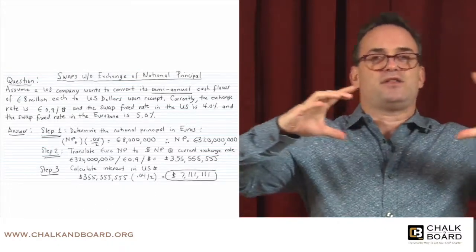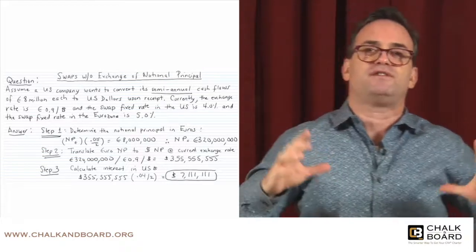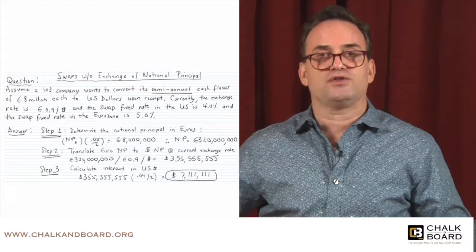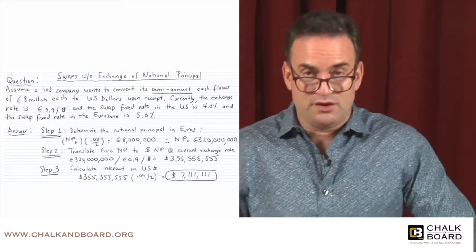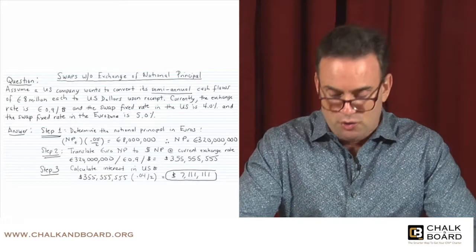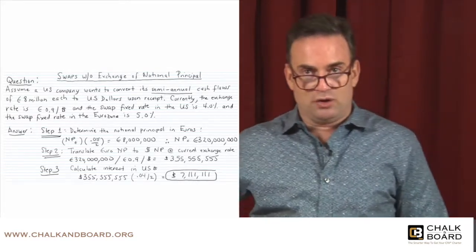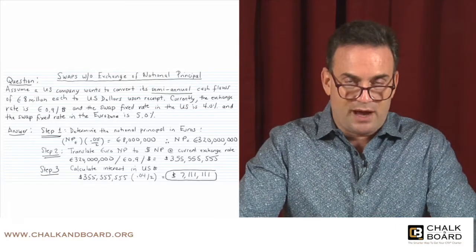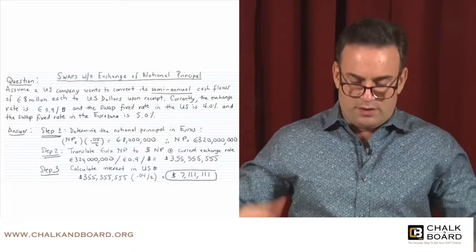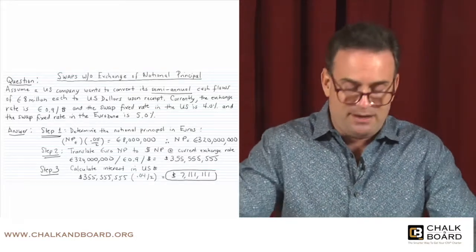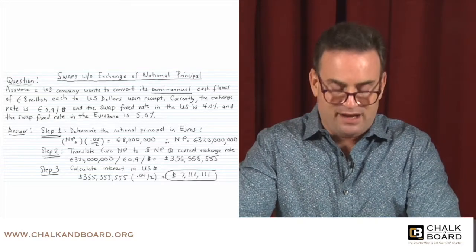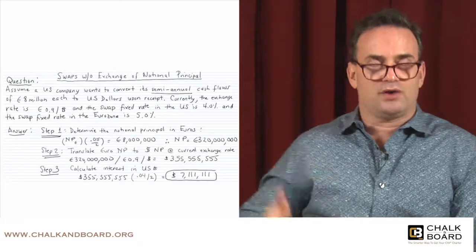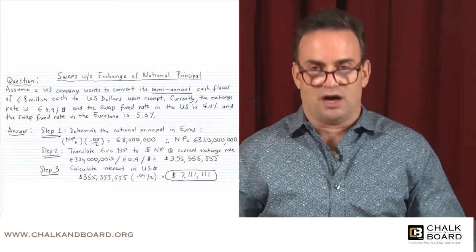Then I take the 355,555,555 dollars and calculate the semi-annual cash flows using the US swap rate of 4%, so 0.04 divided by 2. That gives a semi-annual dollar cash flow of 7,111,111 dollars. So the swap allows the firm to exchange its 8 million euro semi-annual inflow for 7,111,111 dollars.